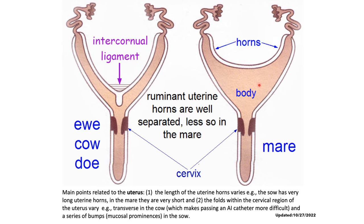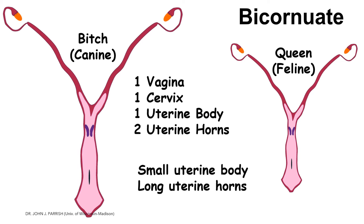Another bicornuate uterus type is exemplified by the canine, bitch, and queen. These species have two uterine horns, one uterine body, one cervix, and one vagina. They have very long uterine horns compared to a small uterine body, similar to the sow. This is due to a low degree of fusion of the paramesonephric ducts — the structures that develop into the female reproductive tract in the embryo/fetus.